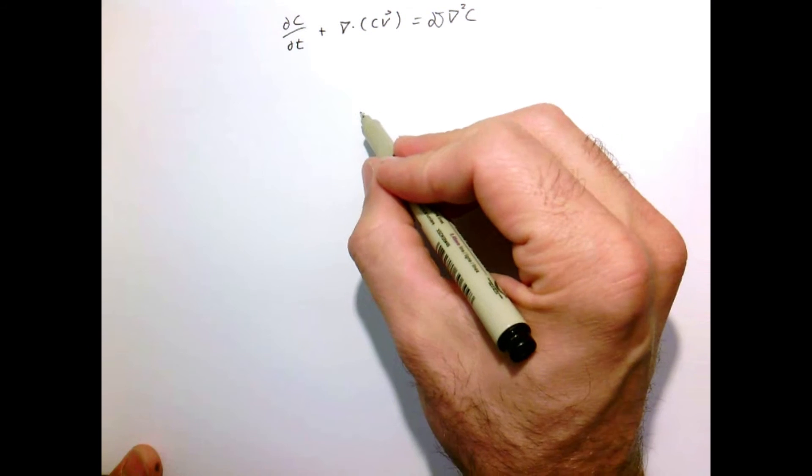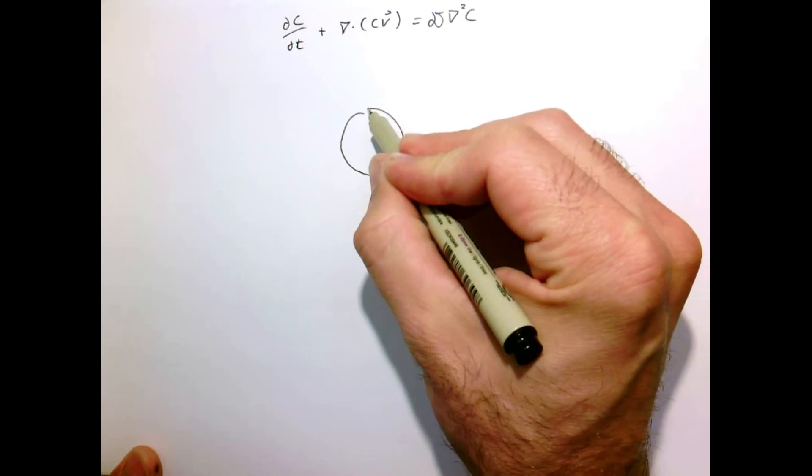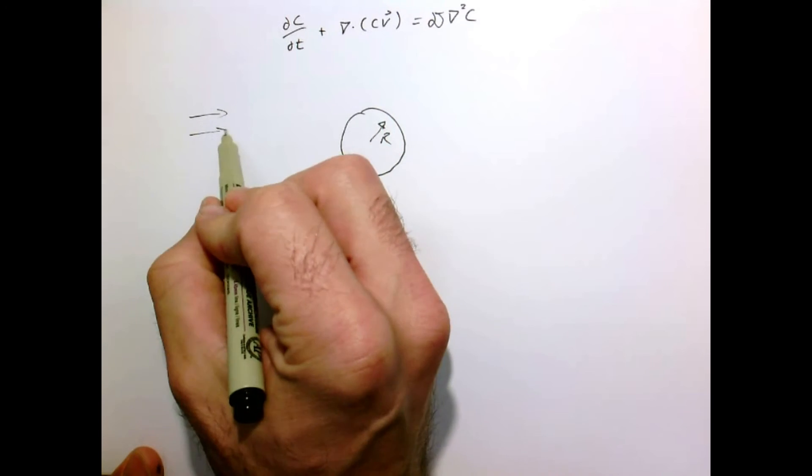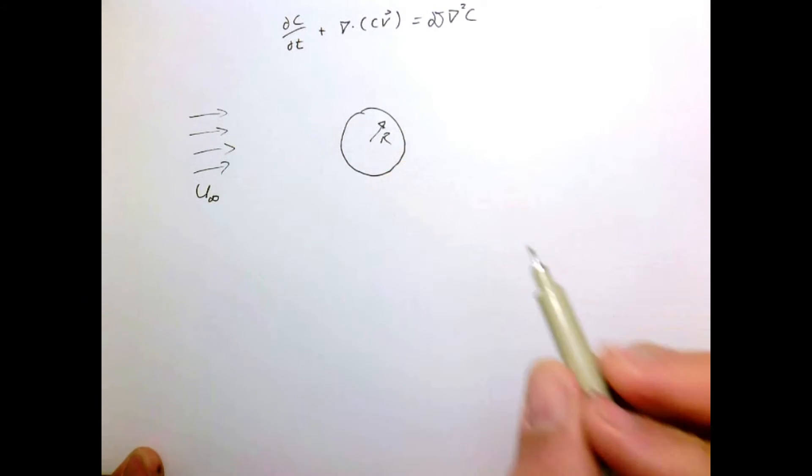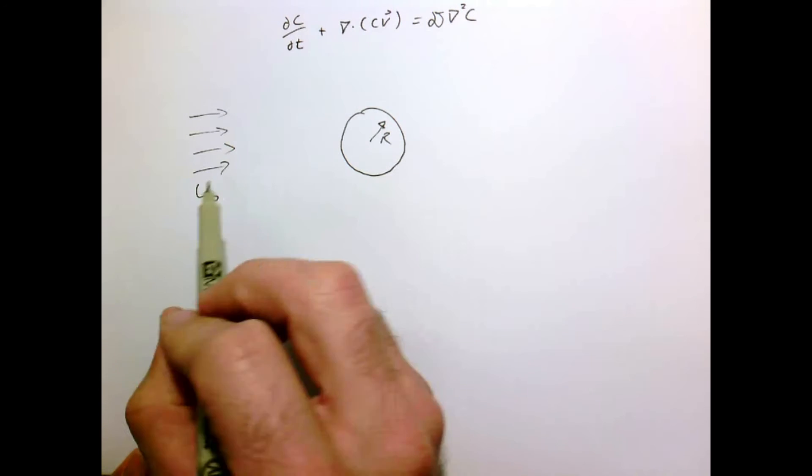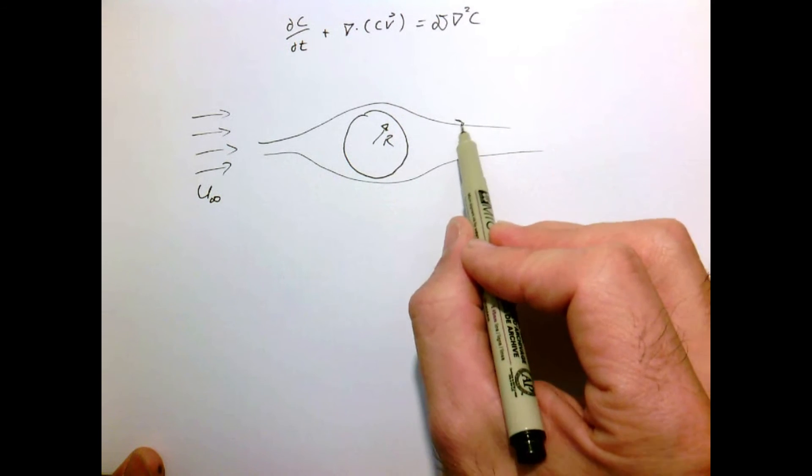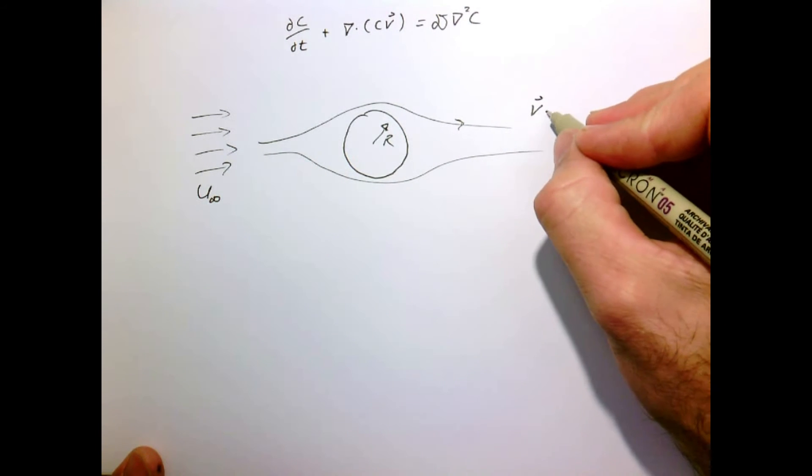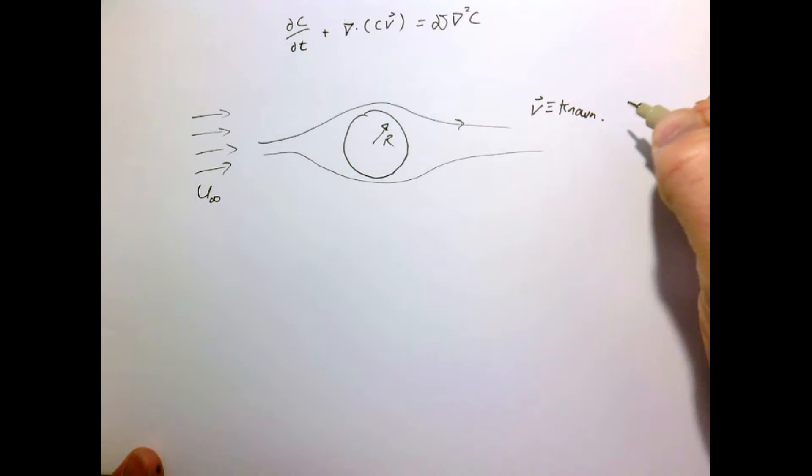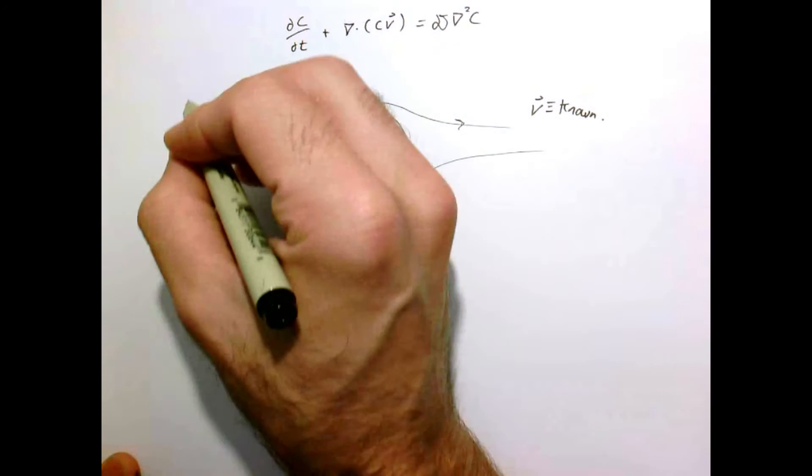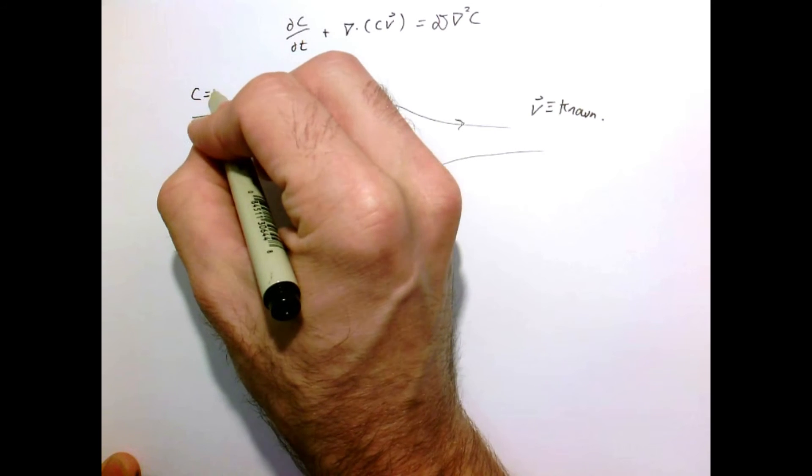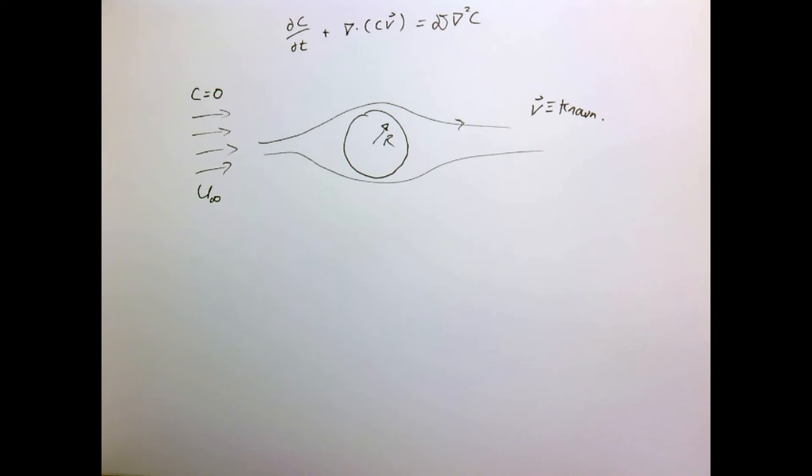We have an equation for our concentration field inside a moving fluid. Let's consider a simple example: a sphere of radius R, with some fluid coming at this sphere with some characteristic velocity which is constant upstream, U infinity. The flow is going to go around this sphere somehow, and we're going to assume that the velocity field is somehow known. Later we'll talk about how to calculate it. Let's just say we know the velocity field, so our only unknown in this problem is C.